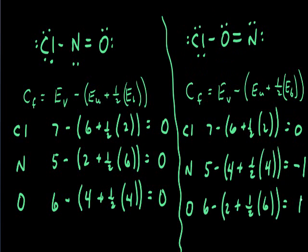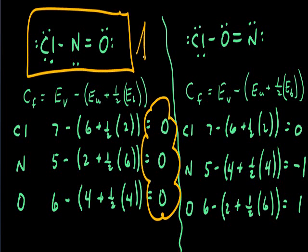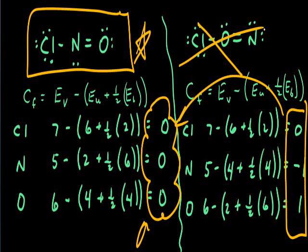Evaluating the formal charges between the two structures, we can see the compound on the left has formal charges for all three atoms equal to zero, indicating this structure is probably the more likely real structure. The one on the right has two values away from zero, which indicates when we compare these, the one with values closer to zero is more likely. This structure on the right is probably not the actual Lewis structure for this compound.